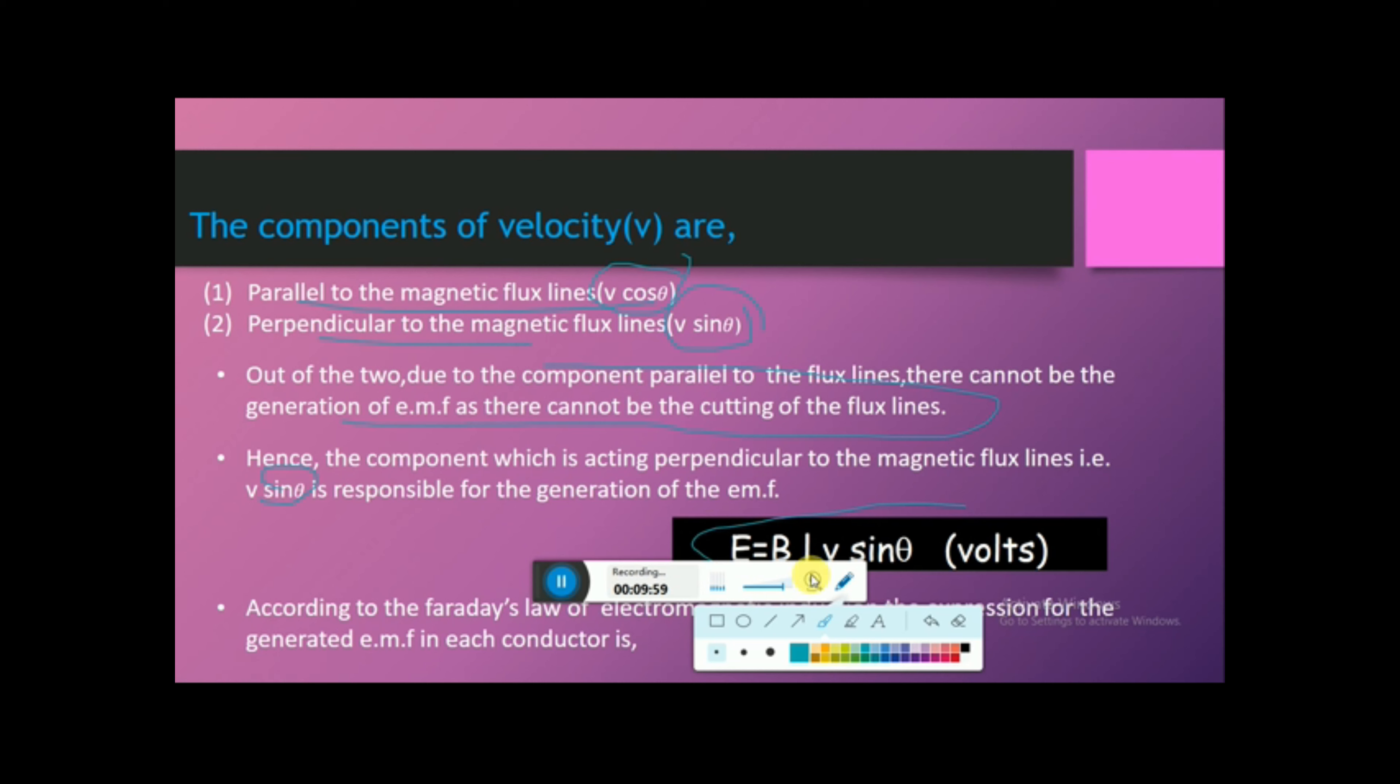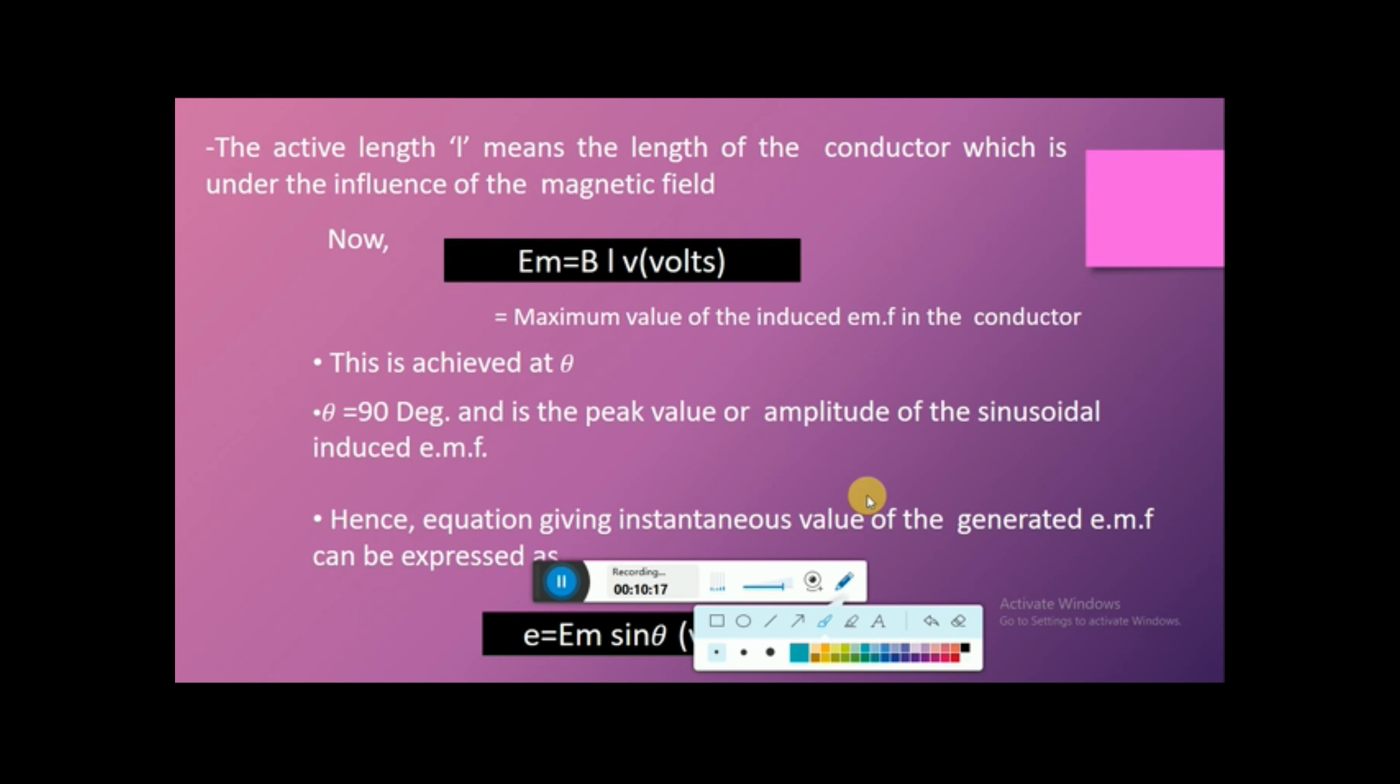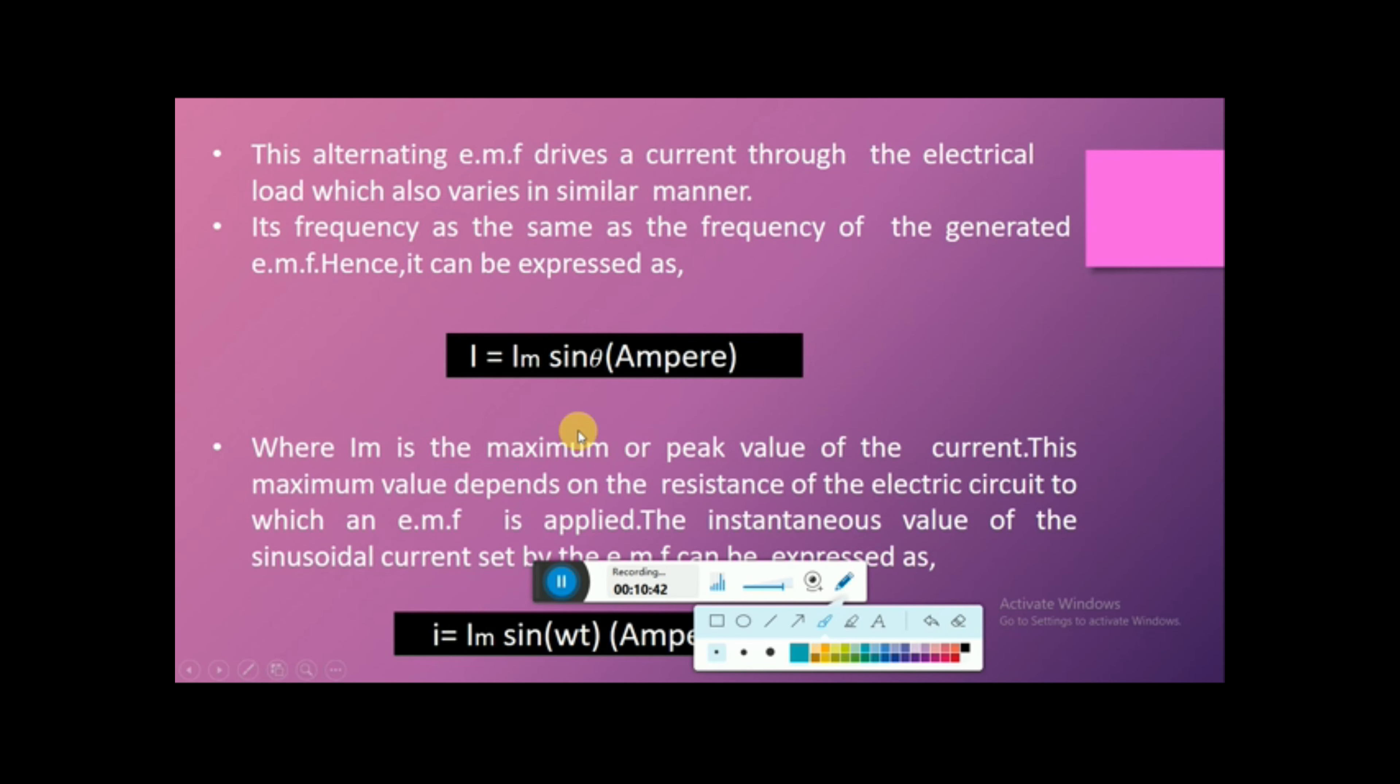We can write E equals B L V sin theta, where B is the maximum flux density, L is the length of the conductor, and V is the velocity of the moving coil. The active length L means the length of the conductor under the influence of magnetic field. EM equals B L V volts at theta equals 90 degrees, the peak value or amplitude. The instantaneous value of generated EMF is expressed as I equals Im sin theta in amperes, where Im is the maximum or peak value of current. This maximum value depends on the resistance of the electric circuit to which an EMF is applied.